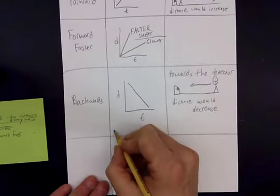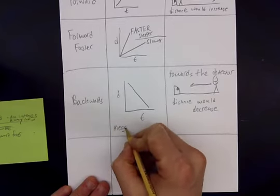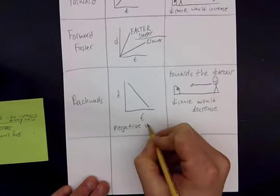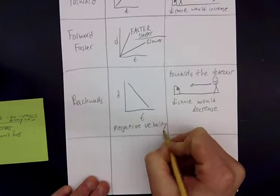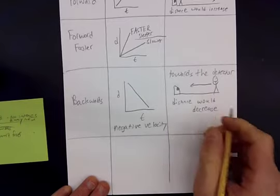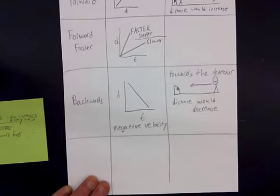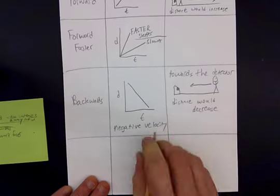Sometimes we call backwards a negative velocity because the slope is negative, so we call it a negative velocity.